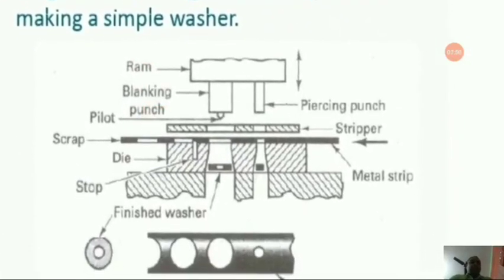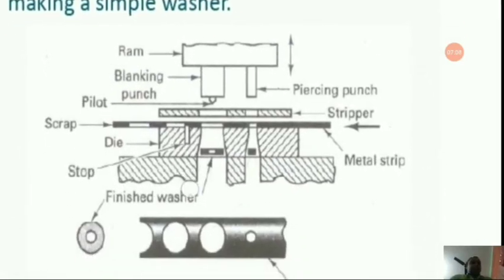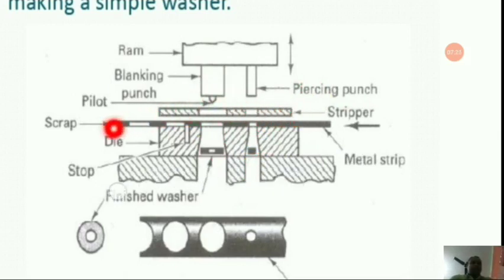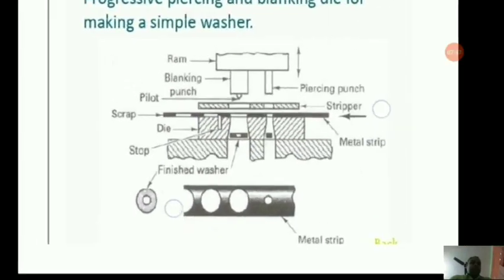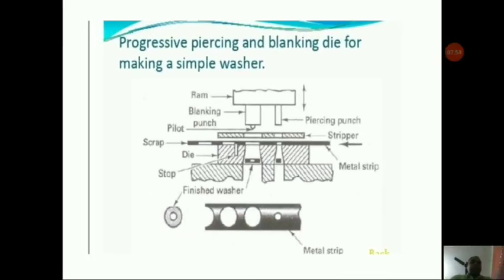Here is a picture for progressive piercing and blanking dies for making a simple washer. The setup includes a ram, a blanking punch, and a piercing punch. There is a stripper, and the scrap is separated while the finished washer comes out of the passage. The metal strip feeds through the stop and dies, and the washers come out.